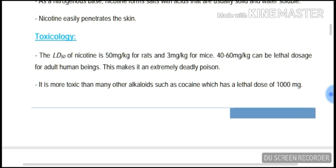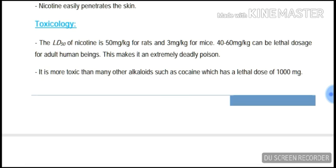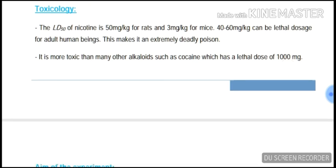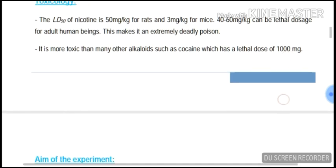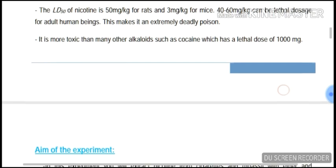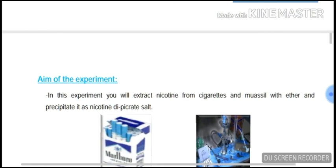Toxicology: the LD50 of nicotine is 50 mg per kg for rats and 3 mg per kg for mice. 40 to 60 mg per kg can be a lethal dose for adult humans, making it an extremely deadly poison. It is more toxic than many other alkaloids such as cocaine, which has a lethal dose of 1000 mg per kg.